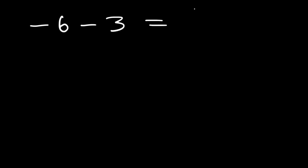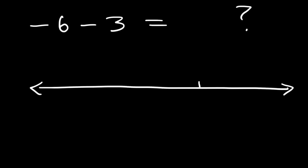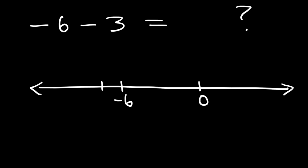Now try this one. Let's say if we have negative 6 and we wish to subtract it by 3. Let's say this is 0 and this is negative 6. Keep in mind, if you want to subtract, you need to move to the left of the number line. So since we want to subtract negative 6 by 3, we need to travel three spaces to the left: negative 7, negative 8, and negative 9. Therefore, negative 6 minus 3 is equal to negative 9.